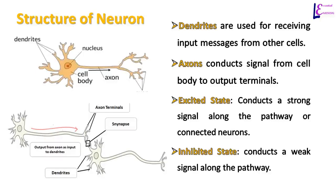In the excited state, interaction at the synapse is intense — that is, dendrites and axon terminals get really close. In the inhibited state, the chemical signal is weak, so the nucleus gives less importance to the message and the gap at the synapse is very large, giving less weight or importance to the message or information.